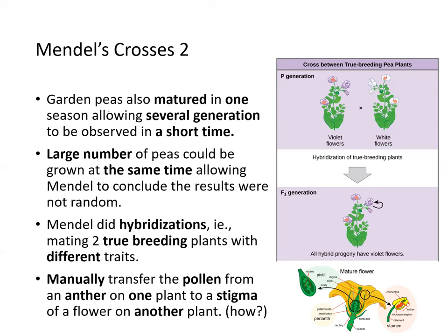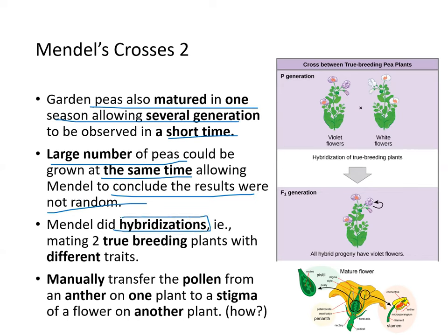Garden peas also matured in one season, allowing several generations to be observed in a short time, and a large number of peas could be grown simultaneously. Mendel did hybridization, or crosses, by mating two true breeding plants with different traits. He manually transferred pollen from the anther to the stigma. So it's going from the anther to the stigma, and if the plant is self-fertilizing, you had to take pollen from one plant and put it on the stigma of another.